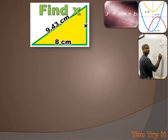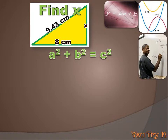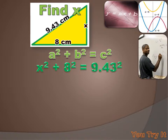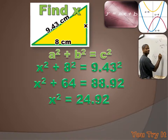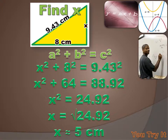We're asked to figure out what x is, but this time x is not the hypotenuse of this right triangle — it's one of the two sides, so it'll solve a little bit differently. The Pythagorean theorem is the same: a squared plus b squared equals c squared. Substituting what we know: x squared plus 8 squared equals 9.43 squared. That gives us x squared plus 64 equals 88.92. We subtract 64 from both sides, so x squared equals 24.92. x equals the square root of 24.92, or approximately 5 centimeters.